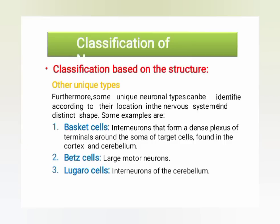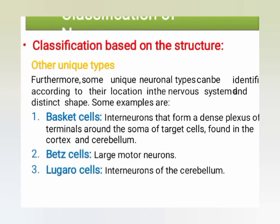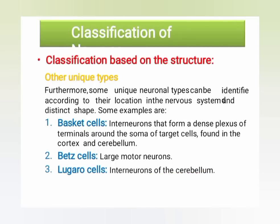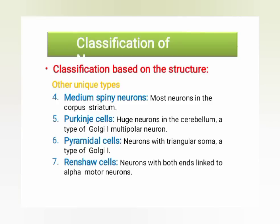Classification based on structure also includes unique neuronal types identified according to their location in the nervous system and axon shape. Some examples are: basket cell interneurons that form dense complexes around the soma of target cells, found in the cortex and cerebellum; and large motor neuron interneurons of the cerebellum.